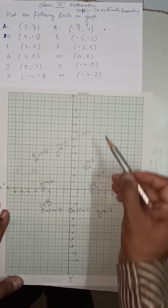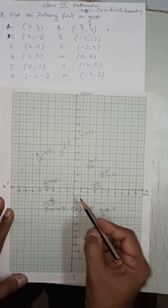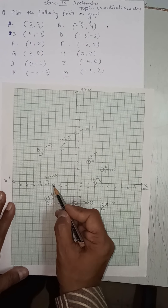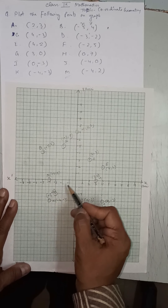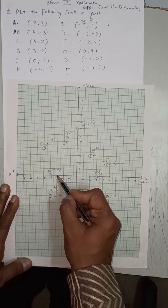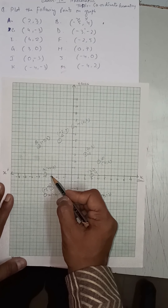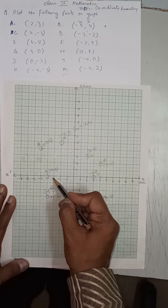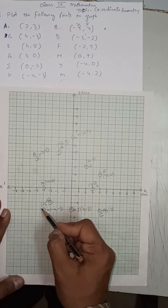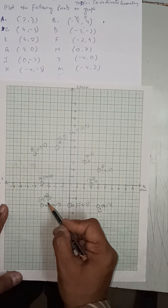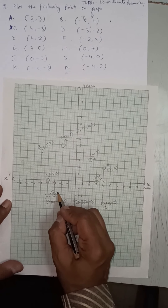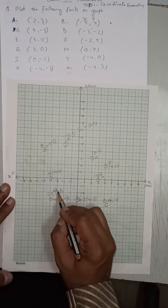Point D is (−3, −2). Minus 3 means x is negative, so we move left: minus 1, minus 2, minus 3. Minus 2 means y is negative: minus 1, minus 2. At the intersecting point we find point D at (−3, −2) — left-hand side because x is negative, and downward because y is negative.